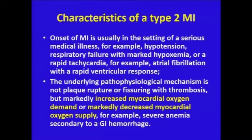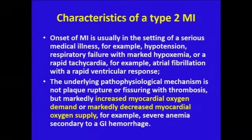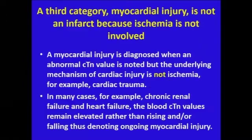The characteristics of a Type 2 MI: the onset is usually in the setting of a serious medical illness — for example, hypotension, respiratory failure with marked hypoxemia, or rapid tachycardia such as atrial fibrillation with rapid ventricular response — patients we see every day in the hospital. The underlying pathophysiologic mechanism is not plaque rupture or fissuring with thrombosis, but markedly increased myocardial oxygen demand or markedly decreased supply — for example, severe anemia secondary to a GI hemorrhage, where hypotension can also play a role.